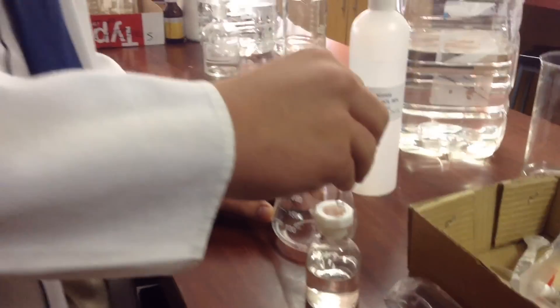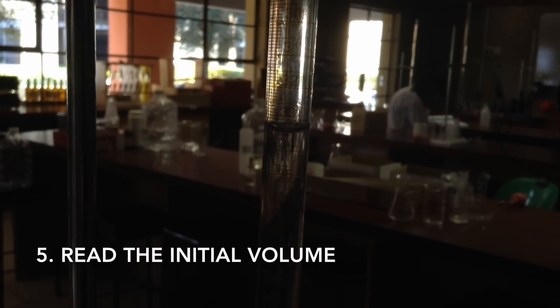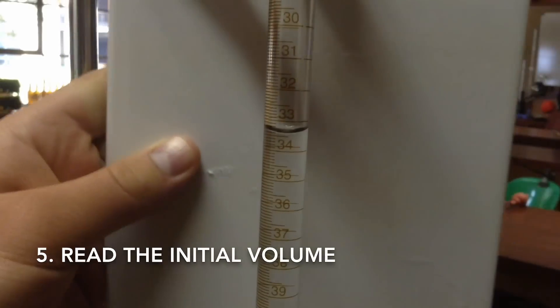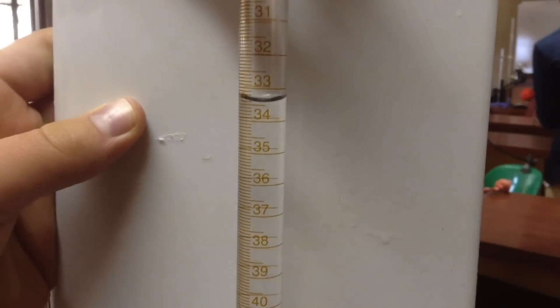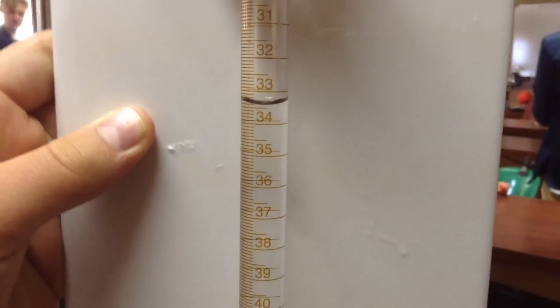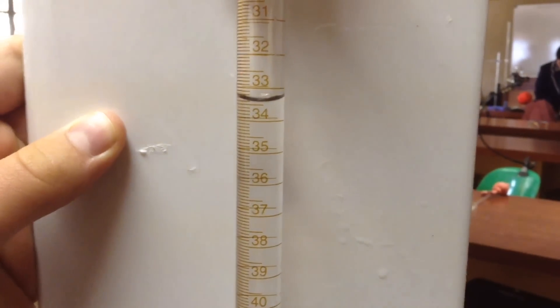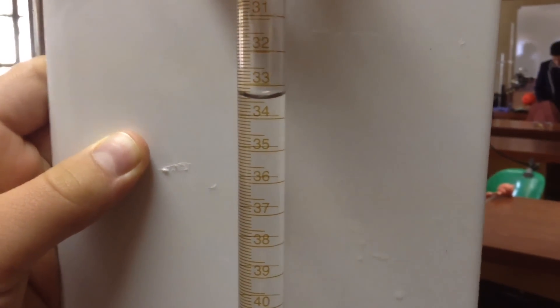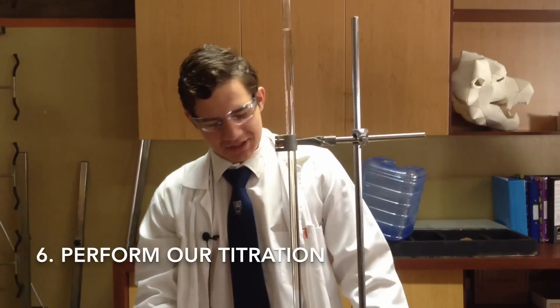Okay, so before we can start our titration we have to first get our initial reading from our burette. So if we put a white tile behind, we measure from the bottom of the concave, and we measure to three decimal places. So this is about 33.40.